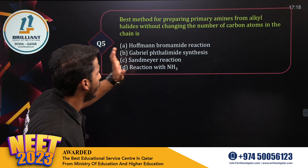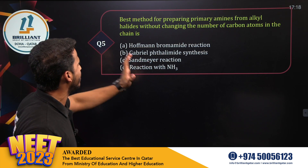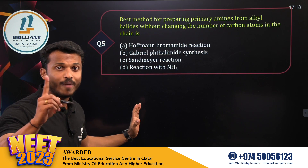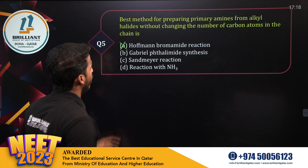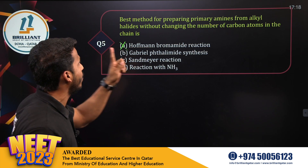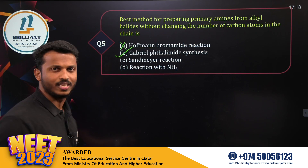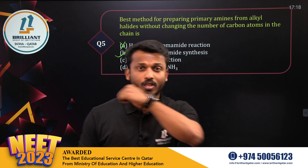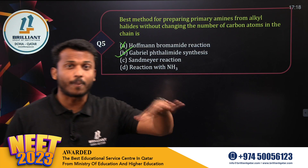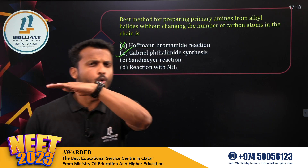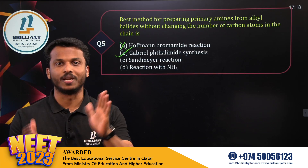Question number five: the best method for preparing a primary amine from an alkyl halide without changing the number of carbon atoms in the chain. The Hoffman reaction can't be used because it reduces the carbon count by one. The correct answer is Gabriel phthalimide synthesis — you start with phthalimide, add alcoholic KOH, then alkyl halide, and you get a primary aliphatic amine without changing the number of carbons. Option B.